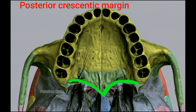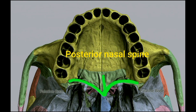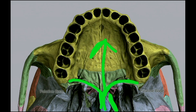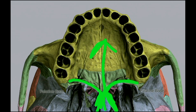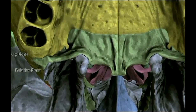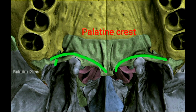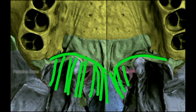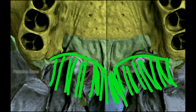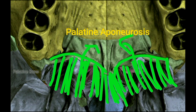The palatine bone presents a posterior free border, which is crescentic, with a midline projection called the posterior nasal spine. On either side of the posterior nasal spine you will see crescentic margins called the palatine crest. The posterior nasal spine gives attachment to the muscle of the soft palate called musculus uvulae. The posterior crescentic margin presents a palatine crest, and this palatine crest gives attachment to the palatine aponeurosis — the flattened tendon of tensor veli palatini muscle — to which other soft palate muscles are attached.